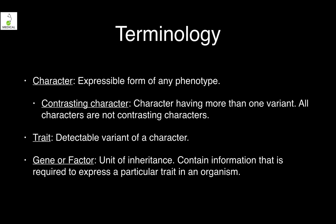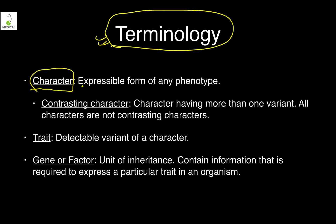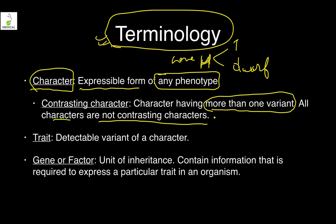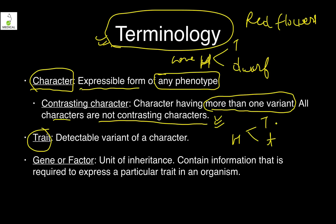Some basic terminology: a character is the expressible form of any phenotype — for example, height is a character. If only one value is possible, it is not a contrasting character. But if there are two possibilities, for example tall and dwarf, it is a character having more than one variant. A contrasting character requires more than one variant.